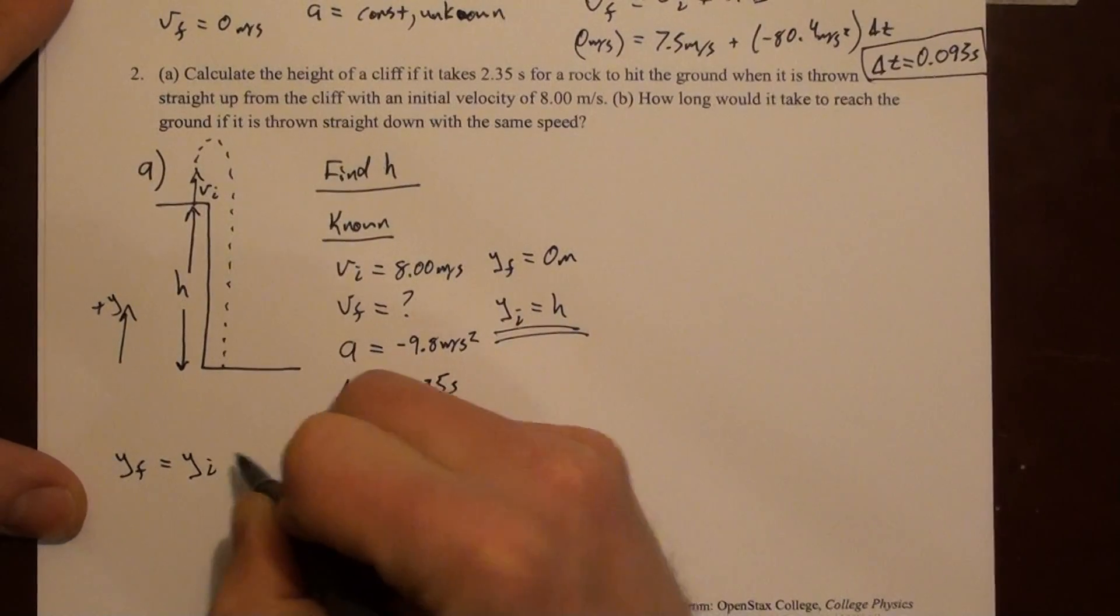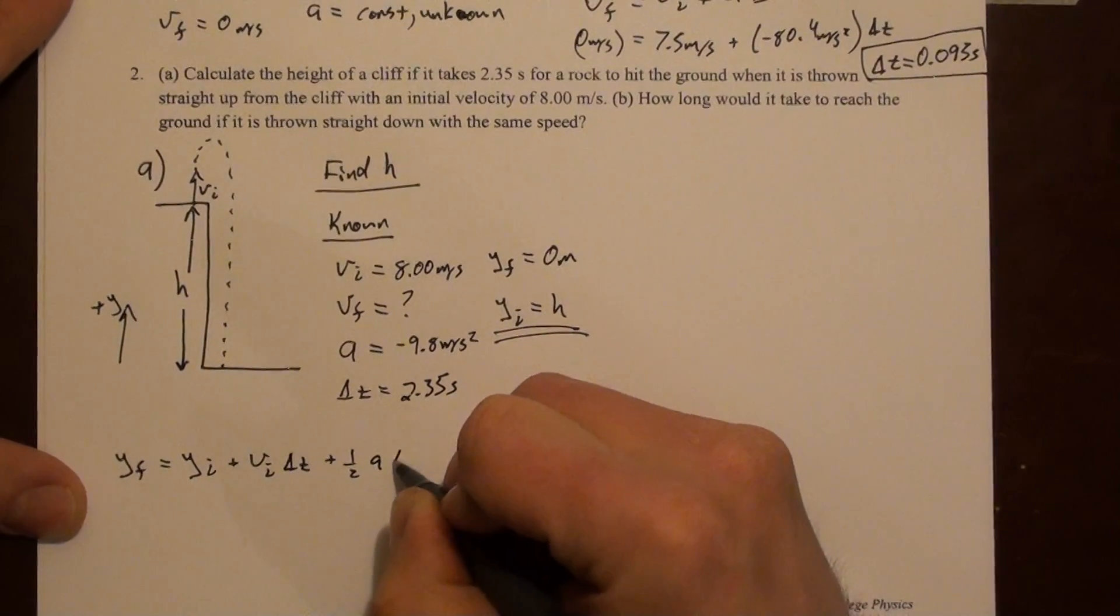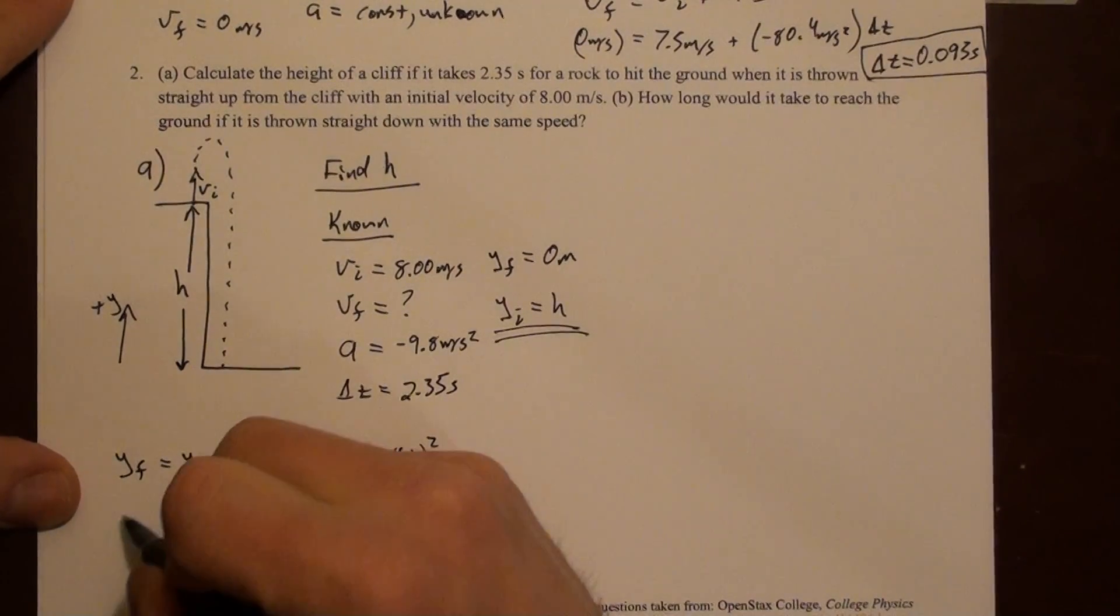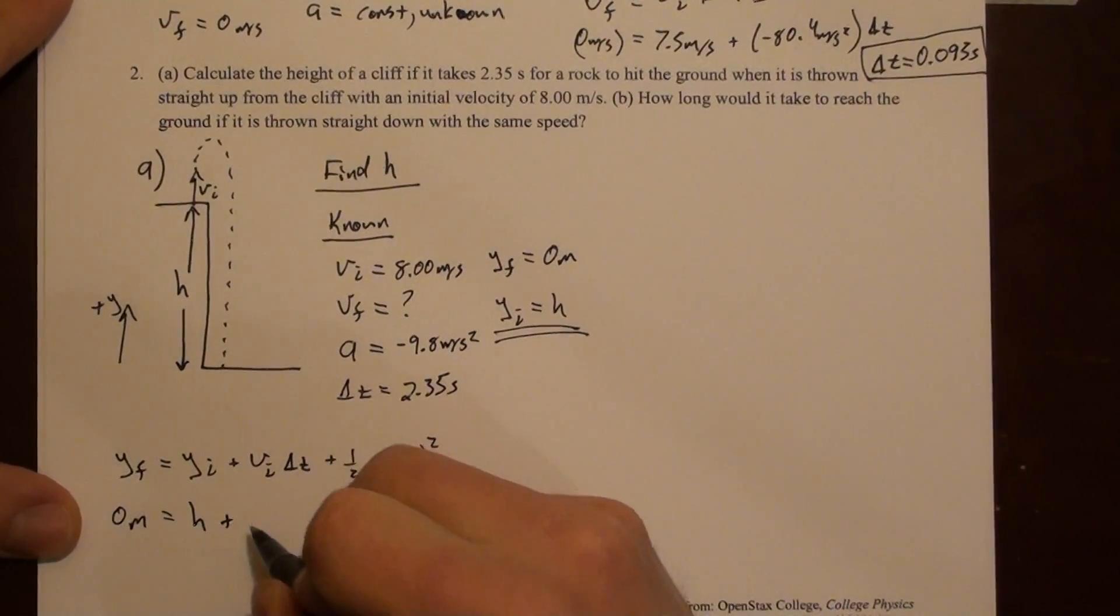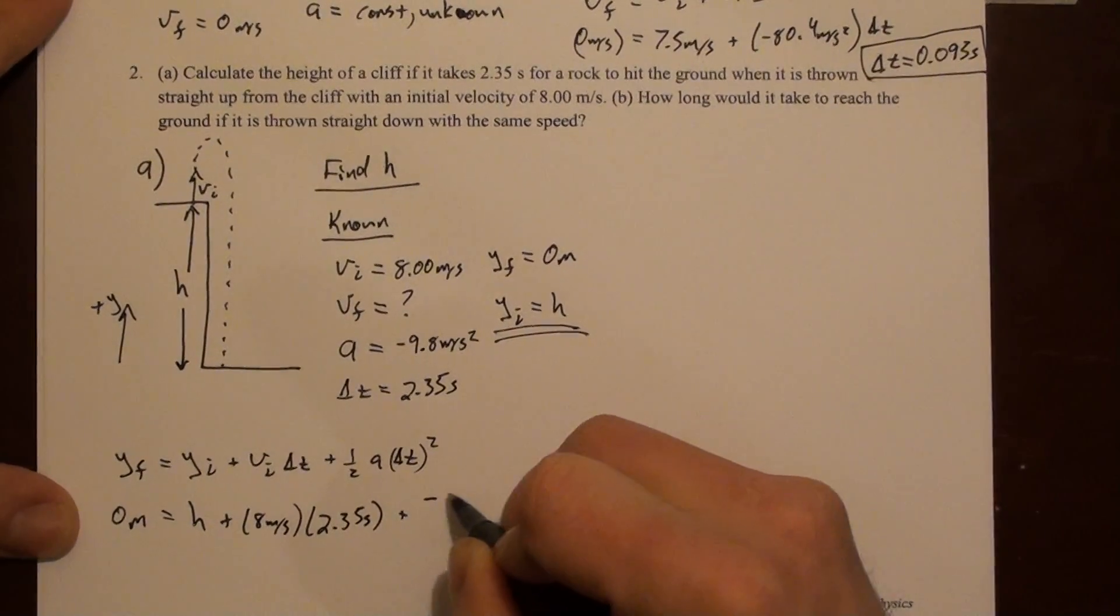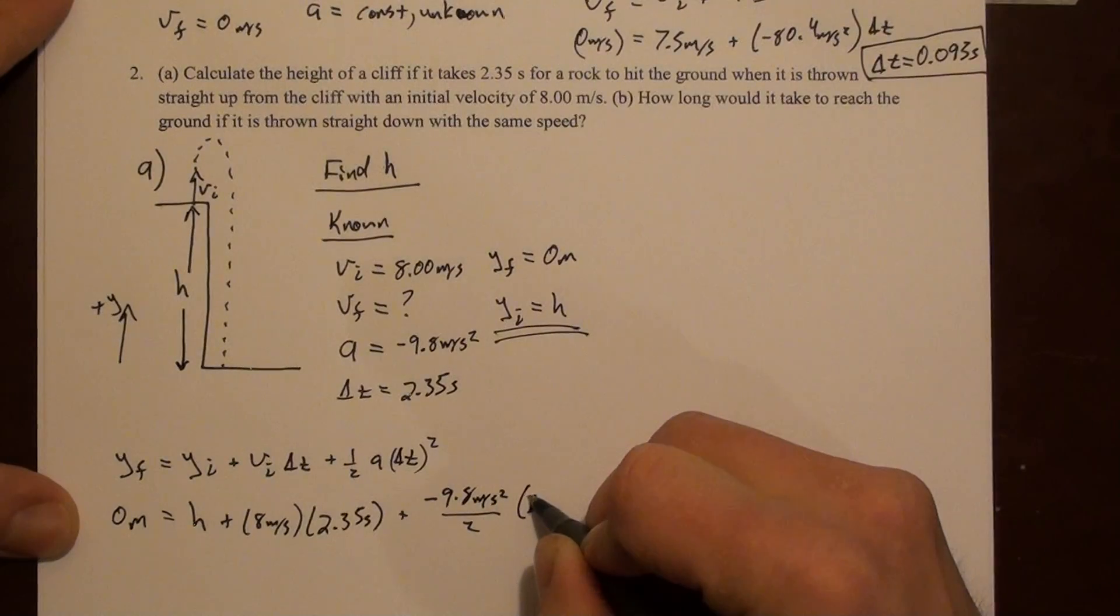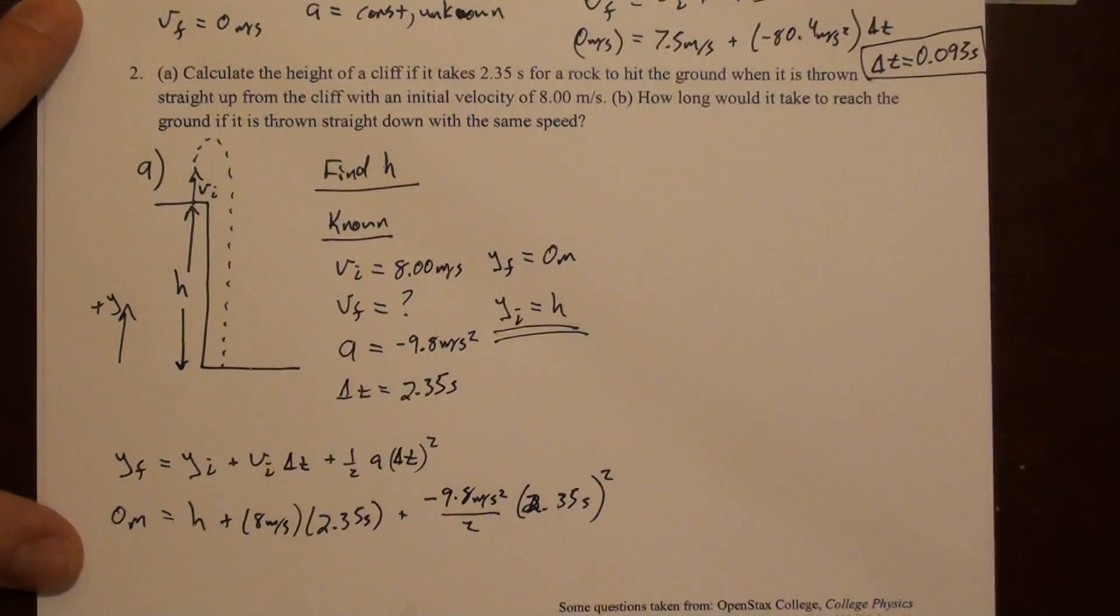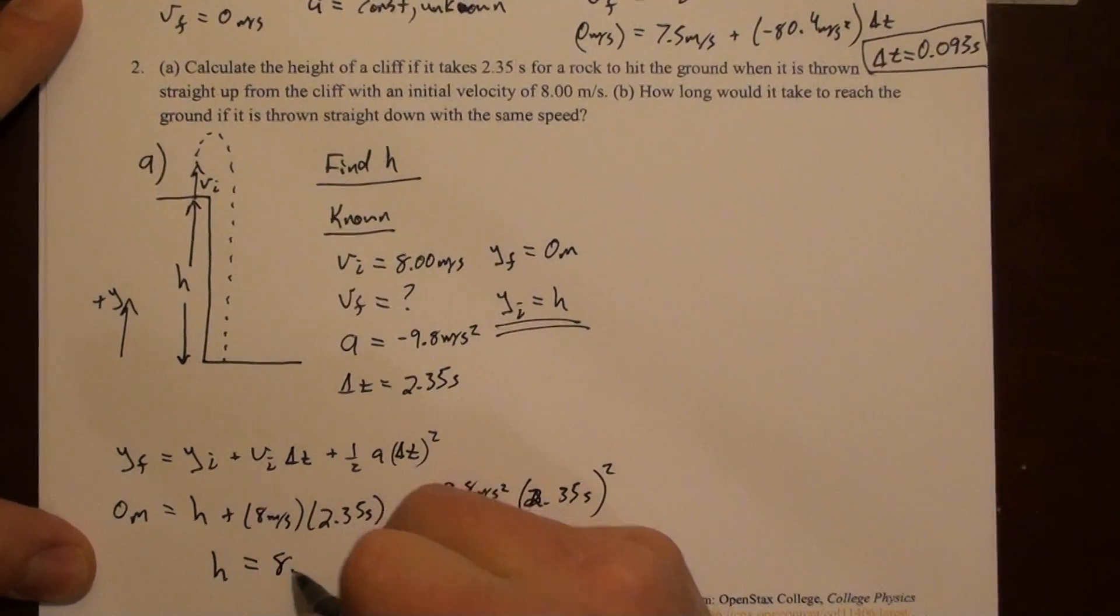So we can plug in some values here. Y final is zero meters. Y initial is h. That's what we're solving for. V initial is 8 meters per second. Delta t is 2.35 seconds. We have a negative 9.8 over 2 times a delta t squared, which is 2.35 seconds squared. If you solve that for h, you come up with 8.26 meters.